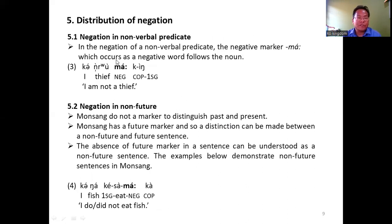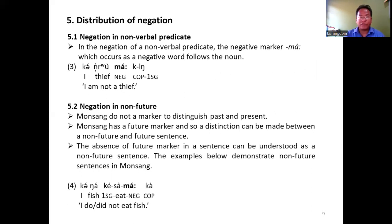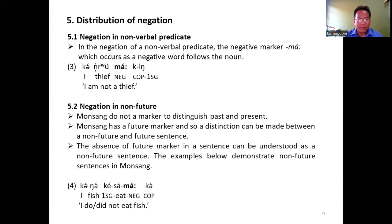Distribution of negation. First, we look at negation in non-verbal predicate. In the negation of a non-verbal predicate, the negative marker ma occurs as a negative word and follows the noun. Negation in non-future: Monsang does not have a marker to distinguish between the past and the present. However, Monsang has a future marker, and so we can make a distinction between non-future and future sentences.